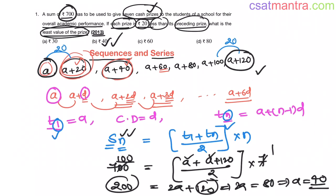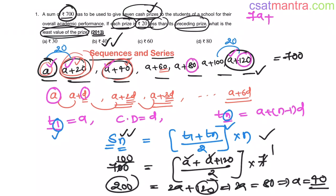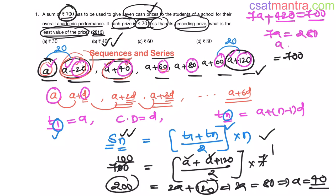You may say, why use the formula? I can just add the 7 cash prizes and equate to 700 to find A. Yes, that works here. But what if 100 cash prizes are given? You cannot add them one by one. If you add the 7 terms manually: 7A plus 120 plus 80 plus 200 plus 100 plus 60 plus 40 gives 420. So 7A plus 420 equals 700, meaning 7A equals 280, and A equals 40 — same answer.